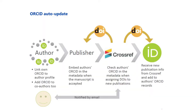For example, starting from the ORCID profile, you can connect to publishers and to Crossref. Crossref is a huge platform for scientific references. Using Crossref, you can link your own publications to your ID using digital object identifiers. I'll show you later on how this can actually be done.